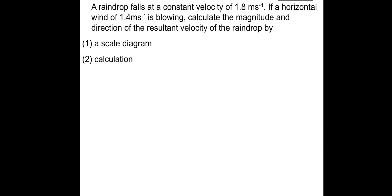So here's a question. If you want to have a go at this question, pause the video. Feel free to have a go. And then I'll show you how to do it. So a raindrop falls at a constant velocity of 1.8 meters per second. If a horizontal wind of 1.4 meters per second is blowing, calculate the magnitude and direction of the resultant velocity of the raindrop. By a scale diagram and by calculation. I'm going to show you the calculation. And then you just follow the previous example to do the scale drawing.